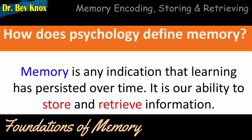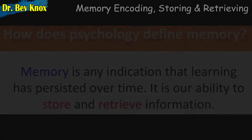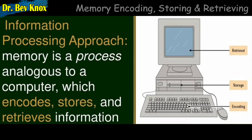Each of the three parts of this definition — encoding, storage, and retrieval — represents a different process. You can think of these processes as being a computer's keyboard, which is the encoding; the hard drive is the storage; and software that accesses the information for display on the screen is the retrieval.